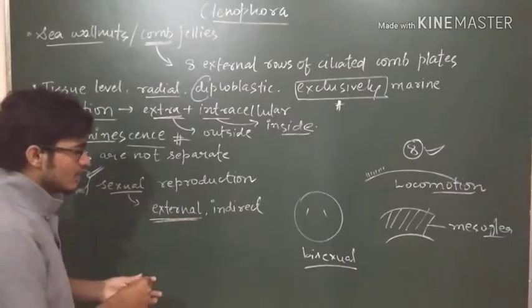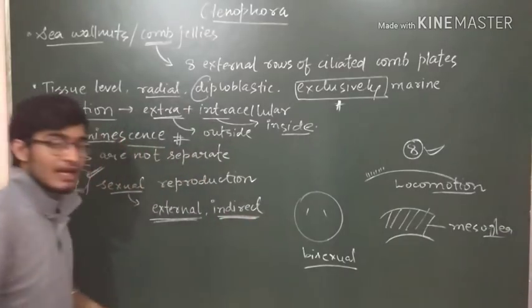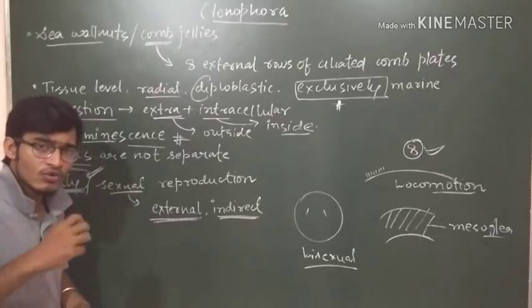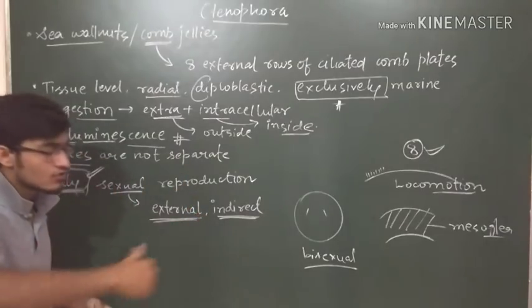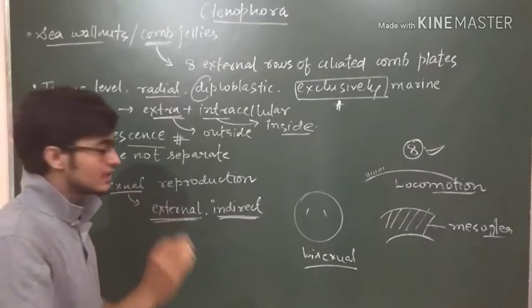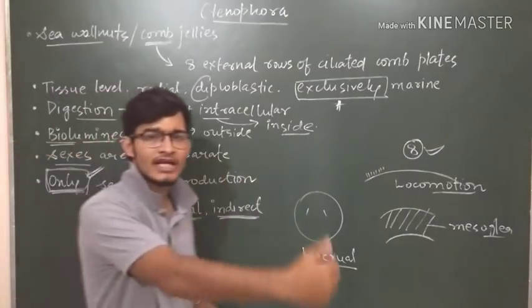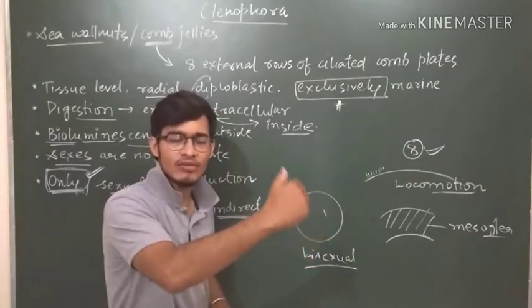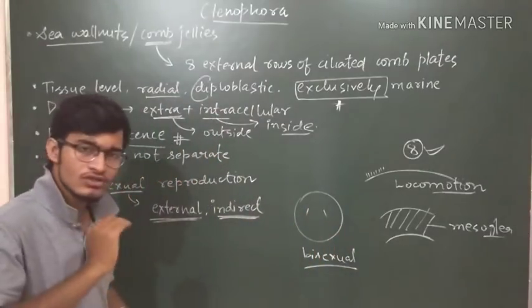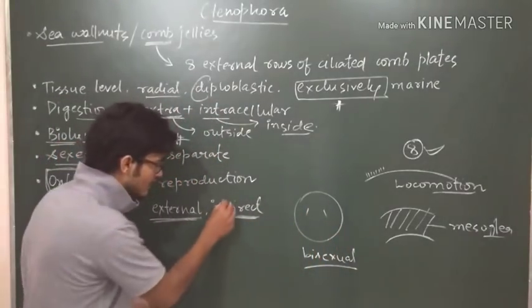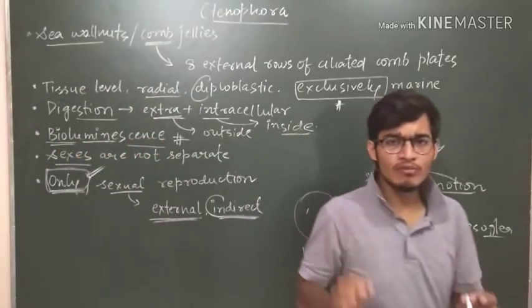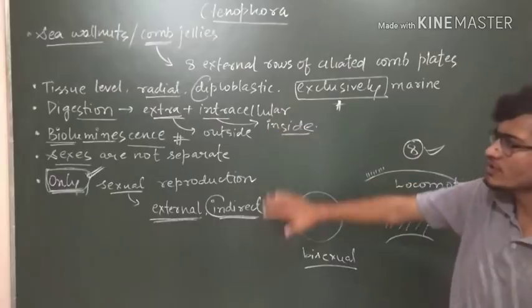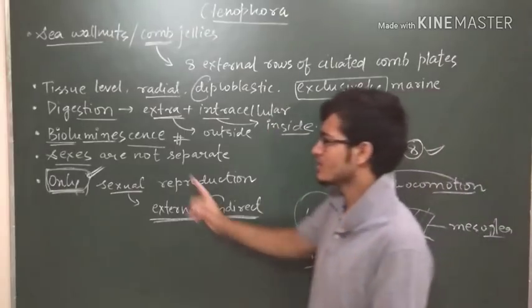That's it. And the development is indirect. It means that the zygote is not getting directly developed into new organism. It is going through some larval stage. If it were direct, then it would directly become an individual, mature. But it is going through some larval stage, that's why it is indirect. So what are the most important things from this article which may be asked in the examination?